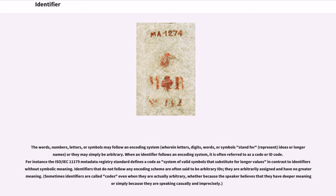When an identifier follows an encoding system, it is often referred to as a code or ID code. For instance, the ISO IEC 11179 Metadata Registry Standard defines a code as a system of valid symbols that substitute for longer values, in contrast to identifiers without symbolic meaning. Identifiers that do not follow any encoding scheme are often said to be arbitrary; they are arbitrarily assigned and have no greater meaning.